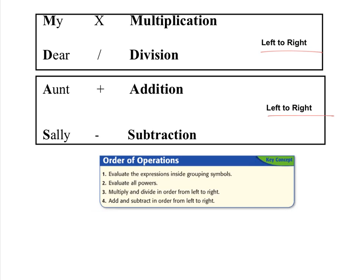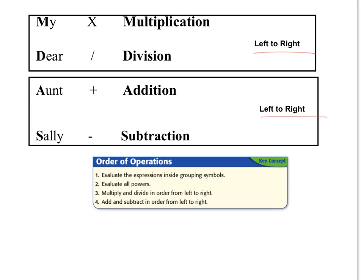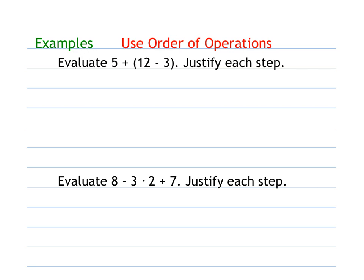The third option to write down is simply a chart with steps: evaluate the expressions inside grouping symbols — that's the P part; evaluate all powers — those are your exponents; multiply and divide left to right; and add and subtract left to right. So our M, D, A, S. Now we're going to try some — evaluate means to find the value of.